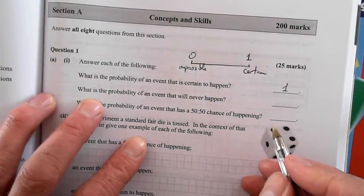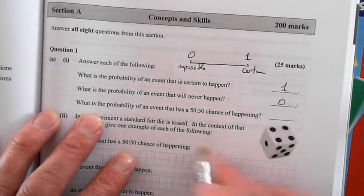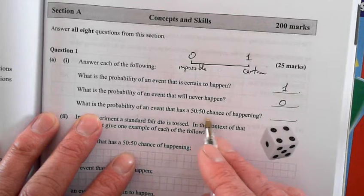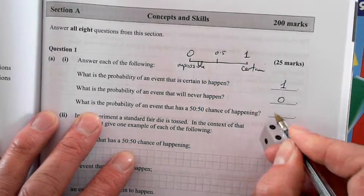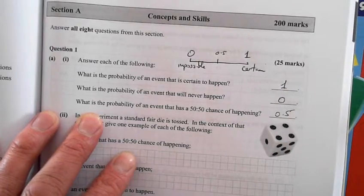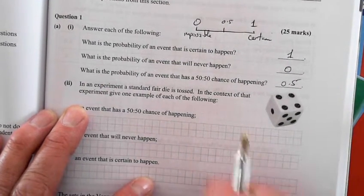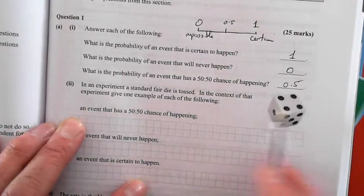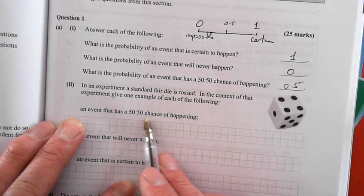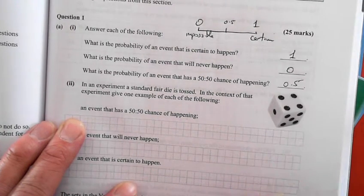So certain is one. Probability of an event that will never happen is zero. Probability of an event that has a 50-50 chance is 0.5. In an experiment, a standard fair die is tossed. In the context of that experiment, give one example of an event that has a 50-50 chance of happening.